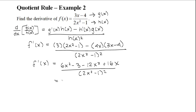This can be further simplified to (-6x² + 16x - 3)/(2x² - 1)² because you're collecting 6x² and -12x² together. That is your final answer, the derivative of f(x).